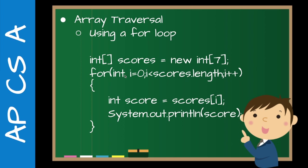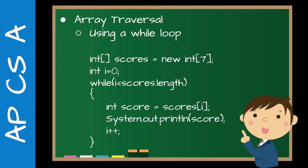Another thing I really emphasize is keeping consistent naming: since this is an array — a group — make sure the name is plural. When you pull one item out, it's singular. So: score/scores, name/names, person/people, student/students. It just keeps a certain level of consistency, and it's really helpful especially for ESL students. I teach at an international school, so this is a really helpful thing.